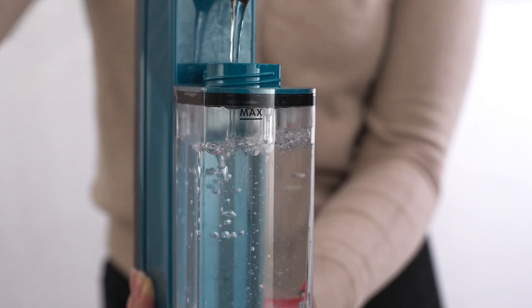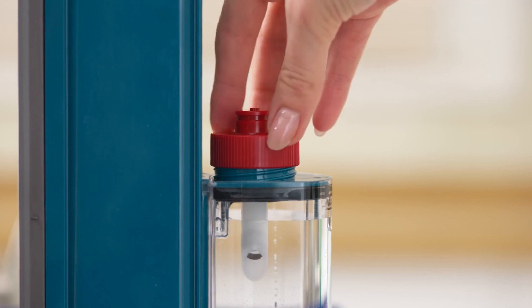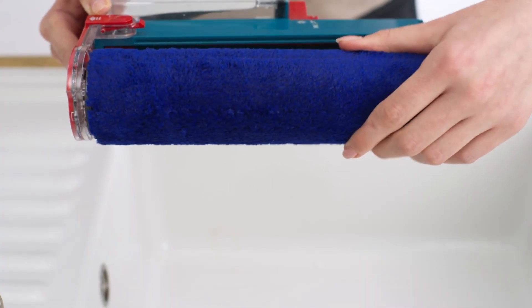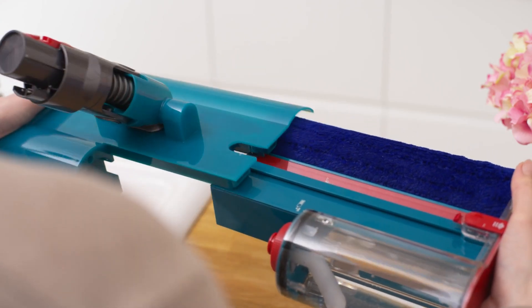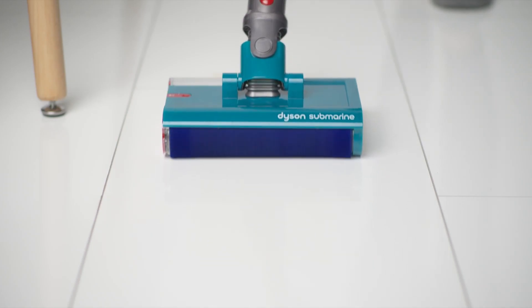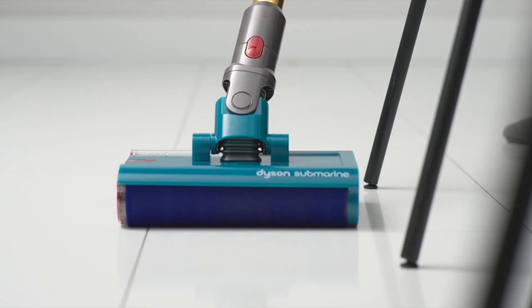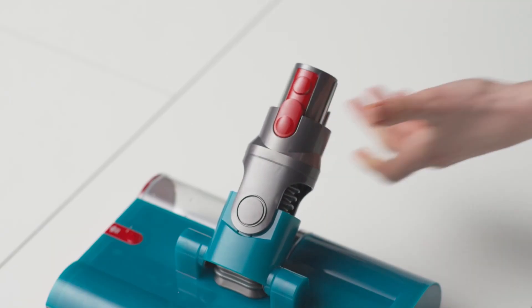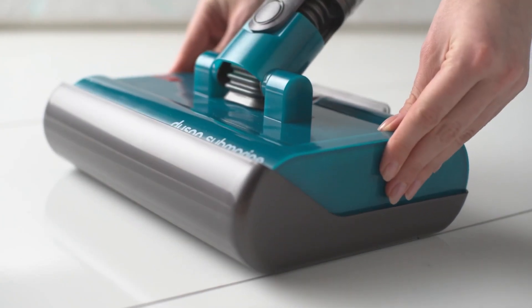One of the standout features of the Dyson V15 Detect Submarine is its intelligent laser dust detection technology. This innovative feature illuminates dust and debris that may be invisible to the naked eye, allowing users to see exactly where they need to clean. The laser light is particularly effective on hard floors, highlighting areas that require more attention. As a result, users can vacuum with confidence, knowing that they are not missing any hidden dirt.